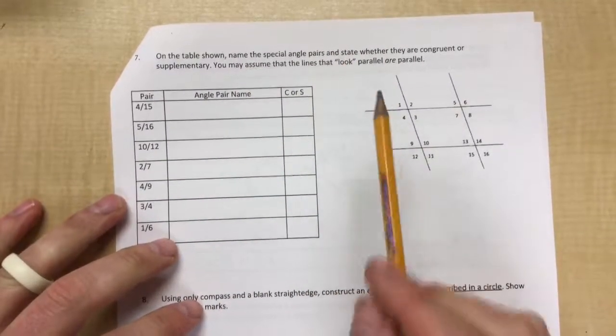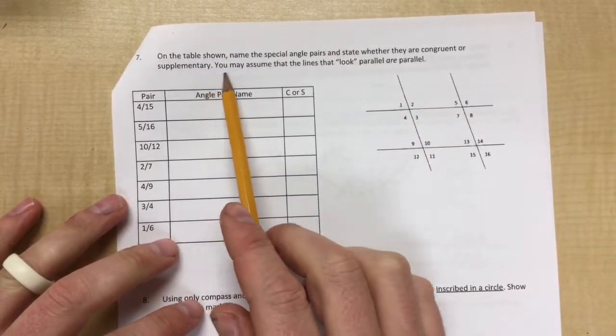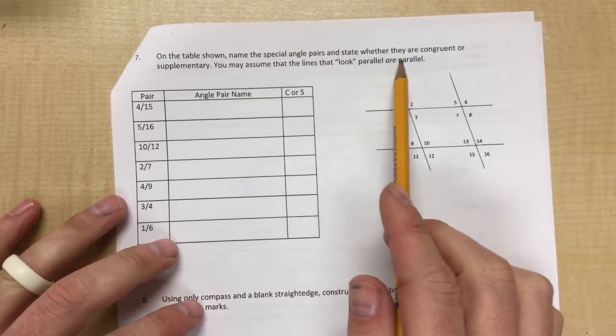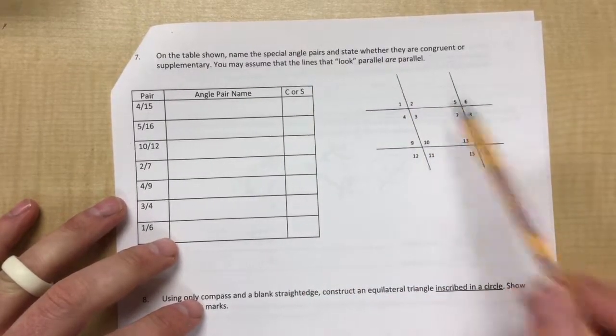So you have to have those memorized. If you don't know, memorize them and state whether they're congruent or supplementary. You may assume that the lines look parallel, that lines that look parallel actually are parallel. So that would be this one and that one, that one and that one.